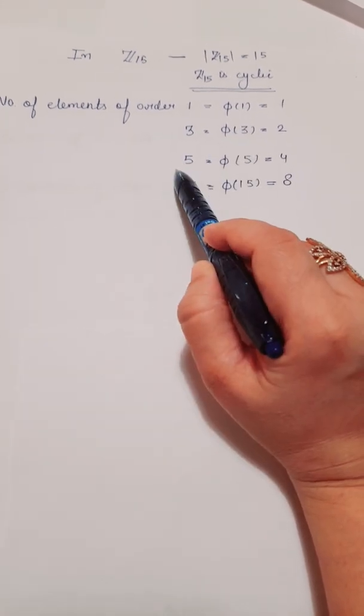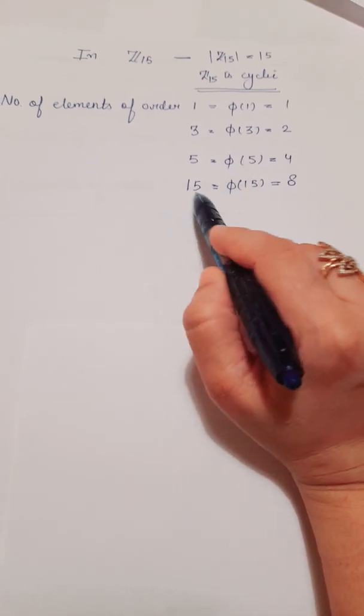Order 3 is phi 3, order 5 is phi 5, number of elements of order 15 is phi 15.